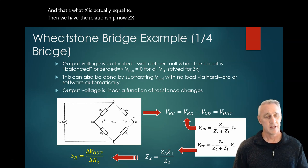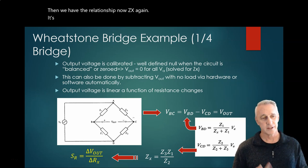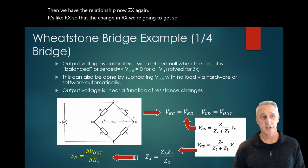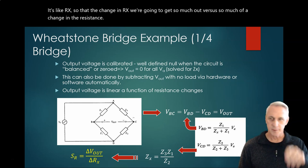These are actually resistances. We're just using impedance here instead of resistance. So Z3 times Z1 divided by Z2, and that's what Zx is actually equal to. Then we have the relationship - now Zx, again, is like Rx. So the change in Rx, we're going to get so much out versus so much of a change in the resistance. And that's where our sensitivity comes out too. And so that's what a quarter bridge example would look like.